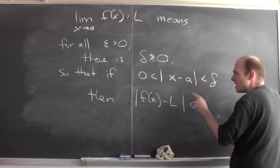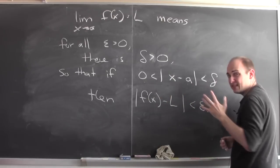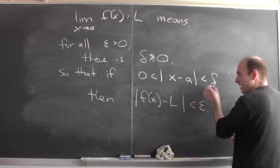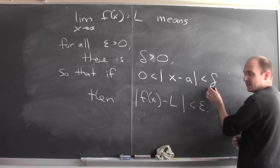So to say that the distance between x and a is between 0 and delta is to say that x is within delta of a.